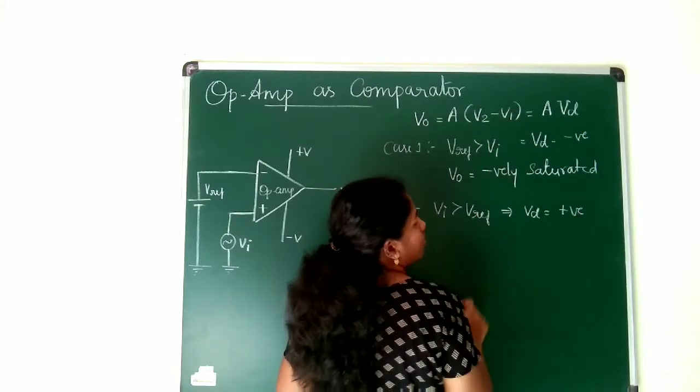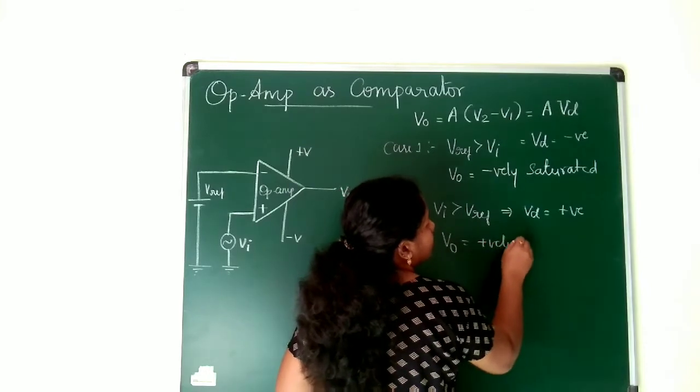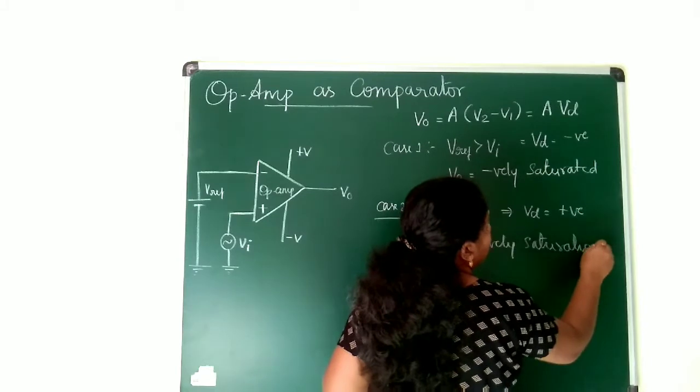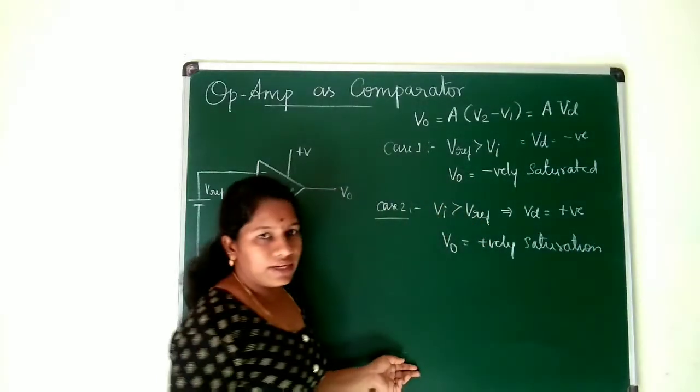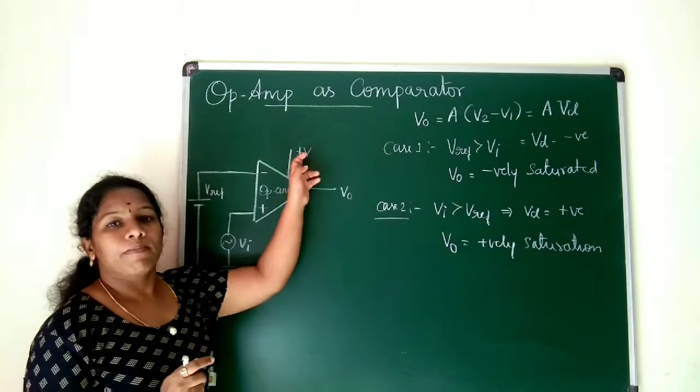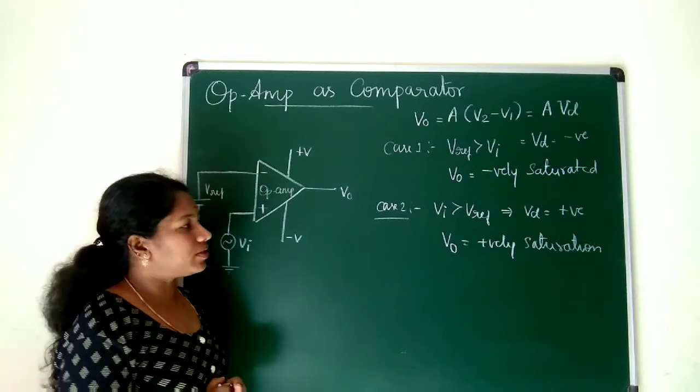So VD will be a positive value. So I can write V0 is equal to positively saturated output you will be getting. The saturation is because of the high gain you have got. The value of the output will be limited by this power supply voltage. That's why you are getting saturation at the output terminal.